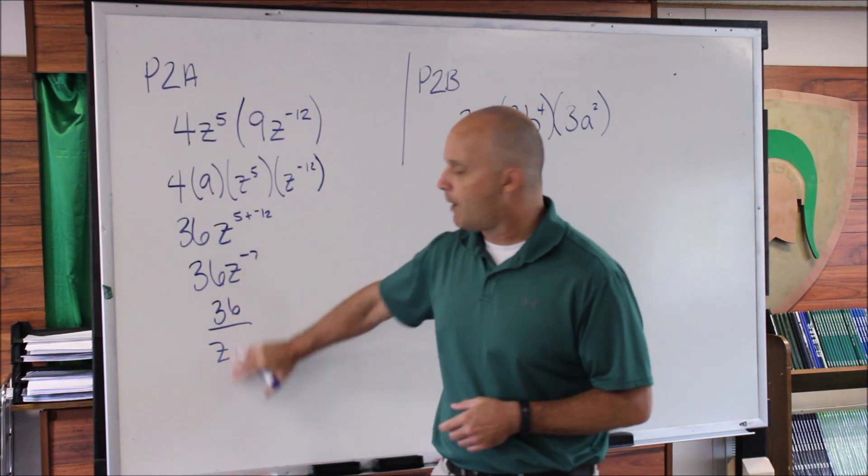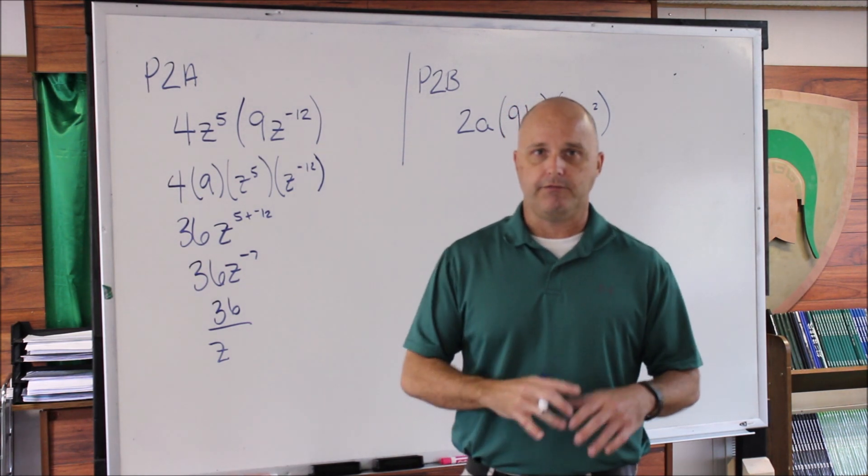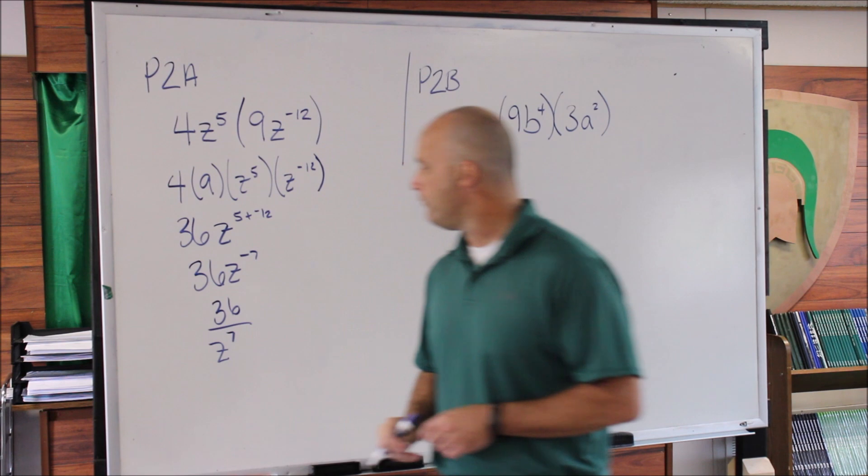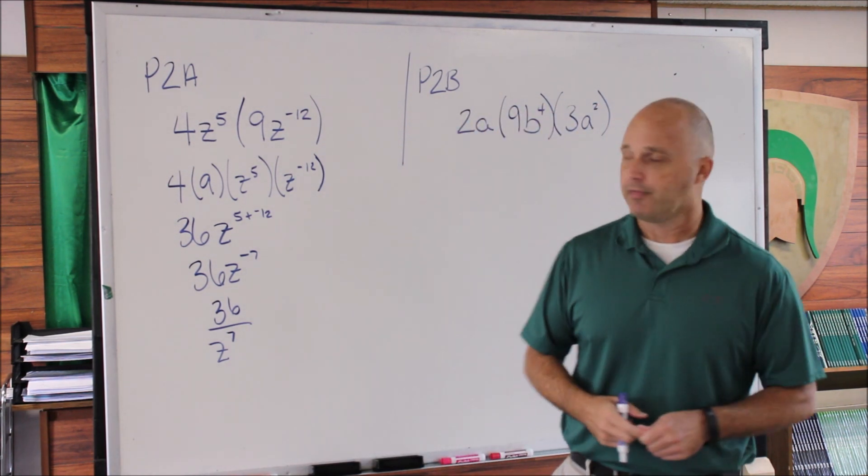the negative has done its job and goes away. So we're just left with z^7. The solution is 36/z^7.